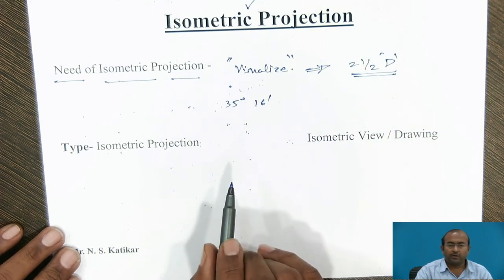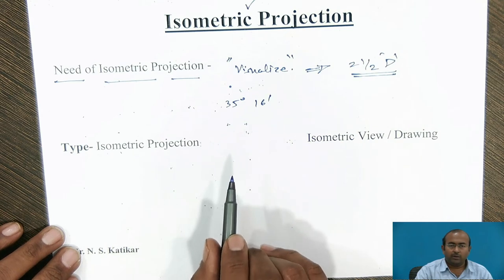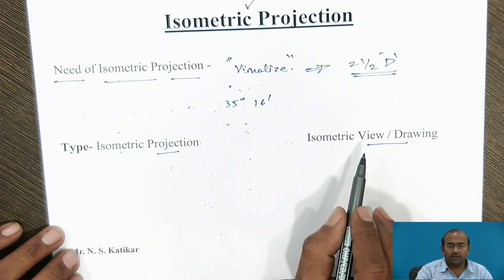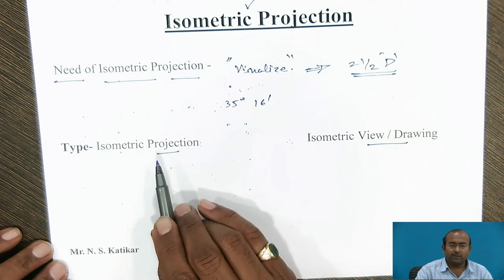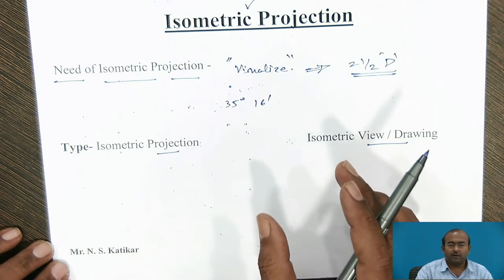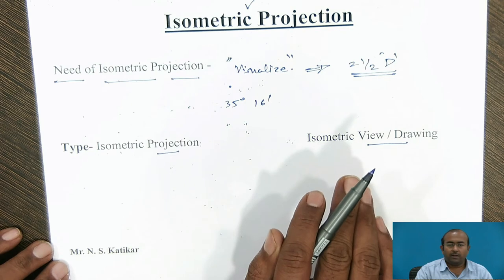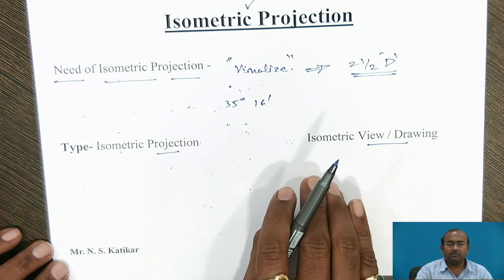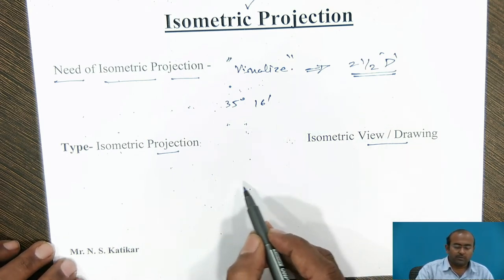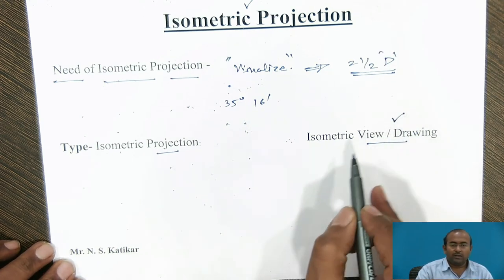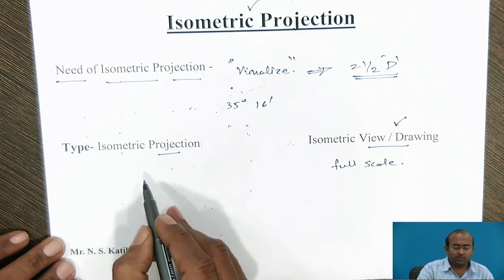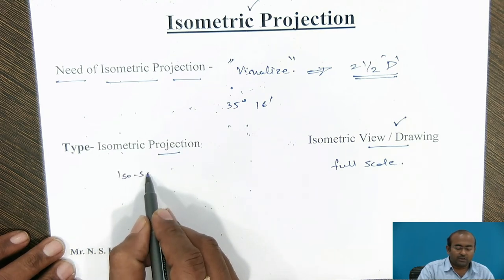When generating an isometric sketch, it can be classified by two means: one is isometric projection and another is isometric view or drawing. When we tilt the part 45 degrees to the vertical plane and 35 degrees 16 minutes to the viewer's side, its scale is reduced. For isometric view or drawing we use full scale, whereas for isometric projection we use the isometric scale.